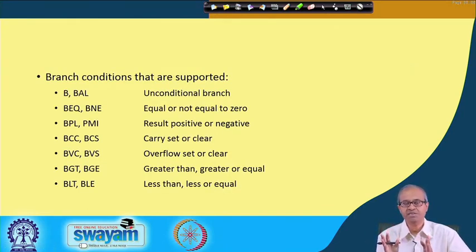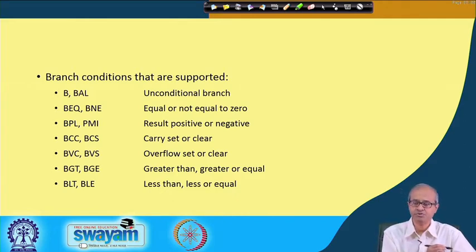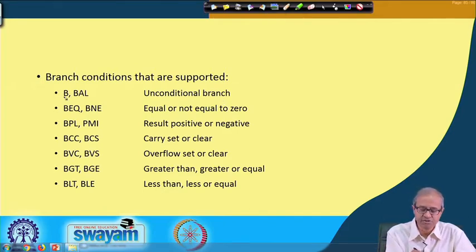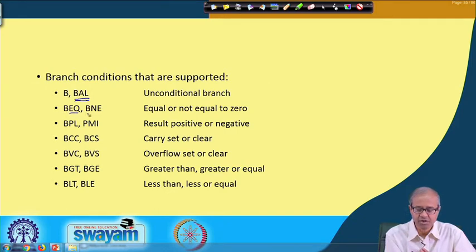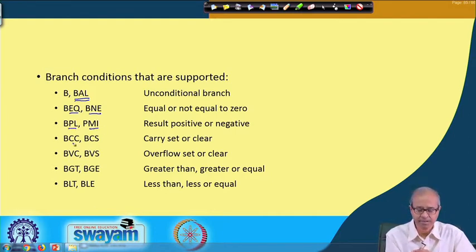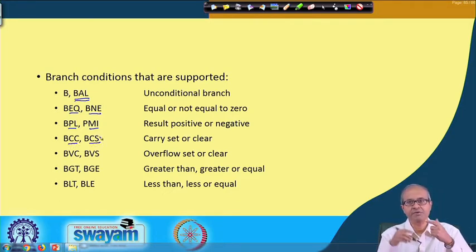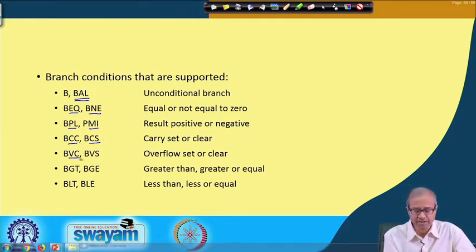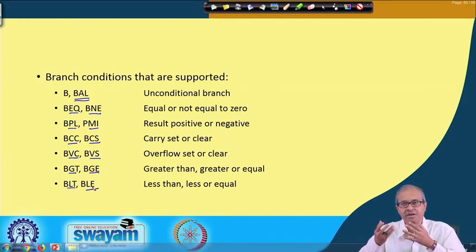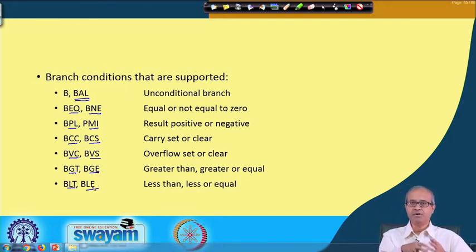Not only branch if not equal — a variety of other conditions are possible. Unconditional branch can use B or BAL. For conditional branches you can have equal or not equal, plus or minus, branch if carry clear or carry set, branch if overflow flag clear or set, branch if greater, greater than or equal, less than, or less than or equal. So based on calculations or comparisons you can decide whether to jump, depending on all these branch conditions supported in ARM.